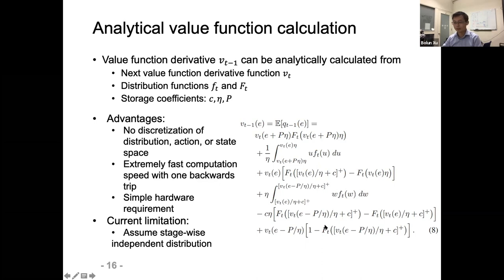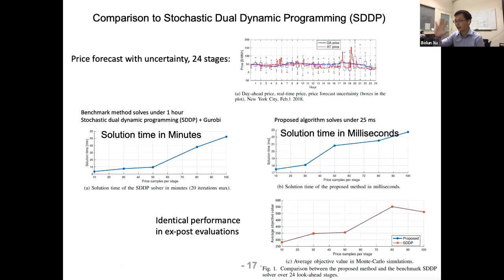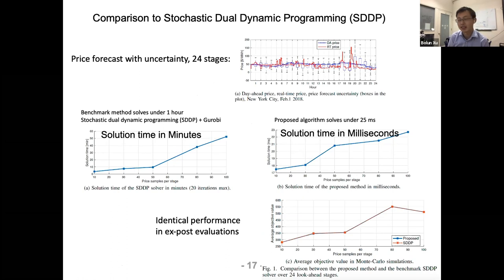A current limitation is we still assume stage-wise independent price distribution, which is not fully realistic, but based on our computation performance we're confident this can be extended to more complicated stage-wise dependent distributions.